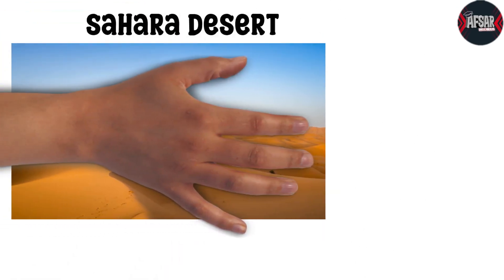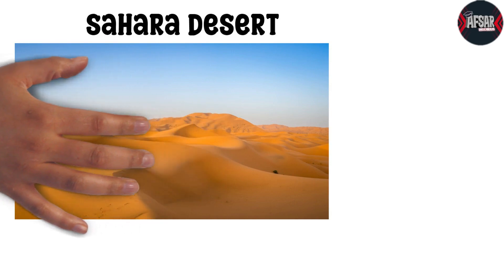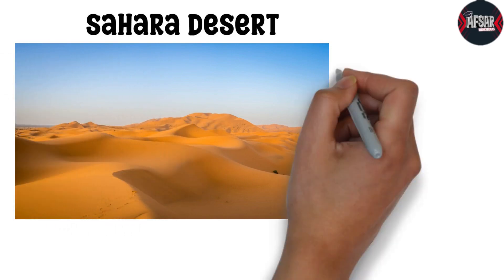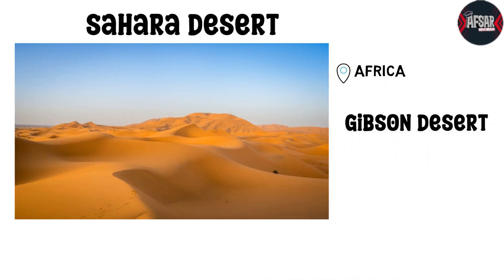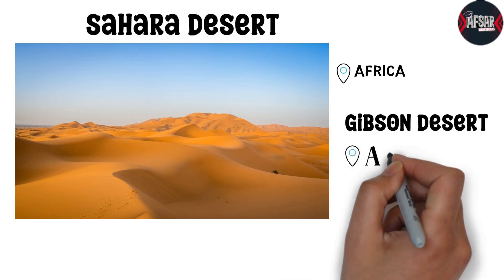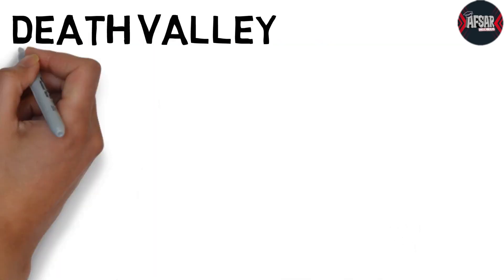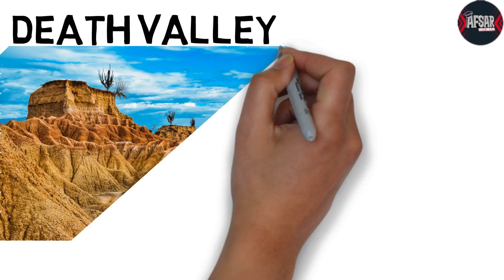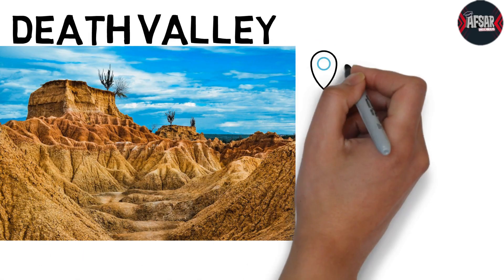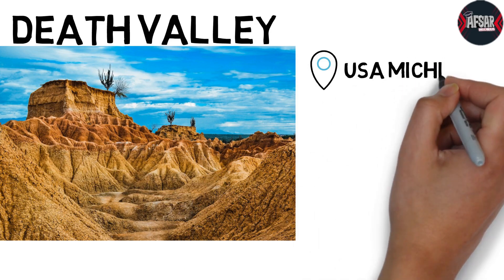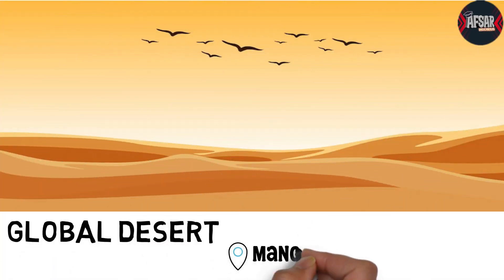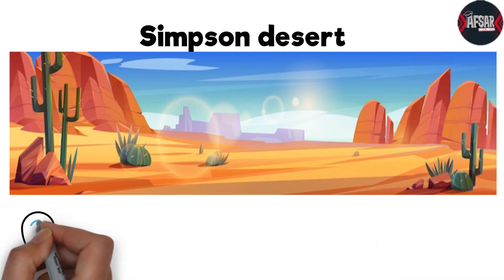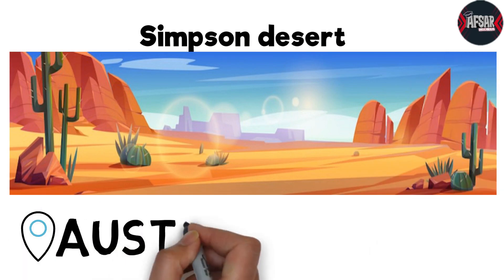The Sahara desert is the biggest desert in Africa. The Egyptian desert is present in Australia. Death Valley is located in the USA in Michigan. The Gobi desert is situated in Mongolia, and the Simpson's desert is situated in Australia.